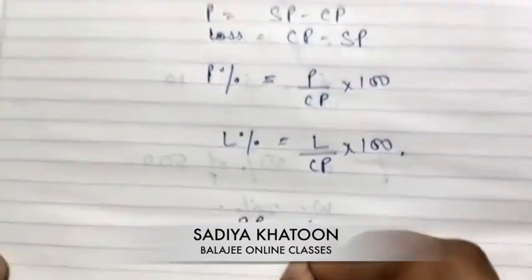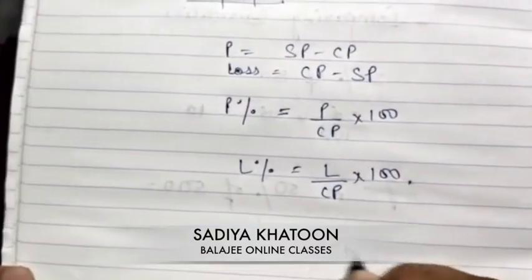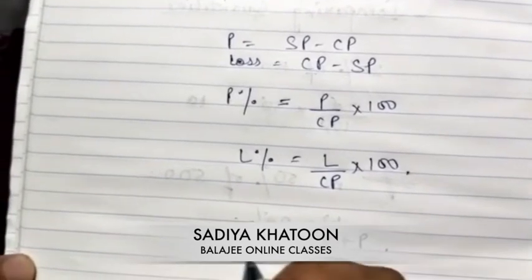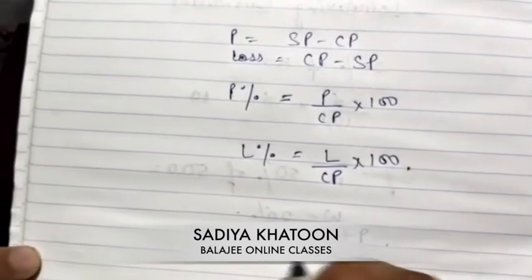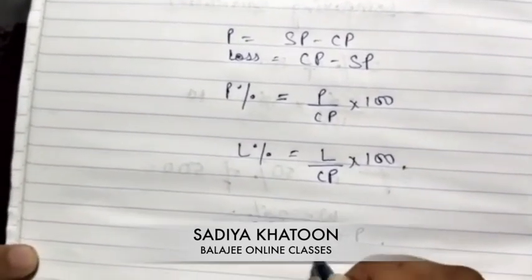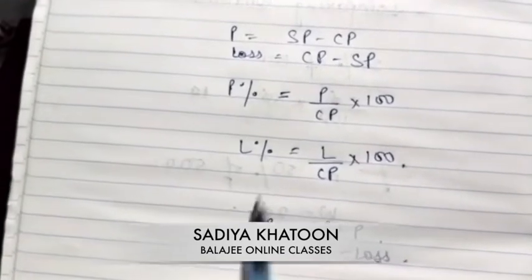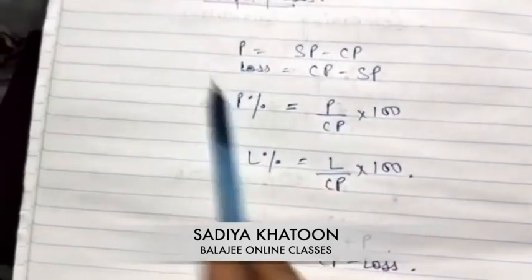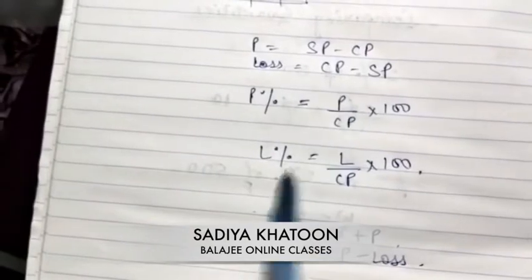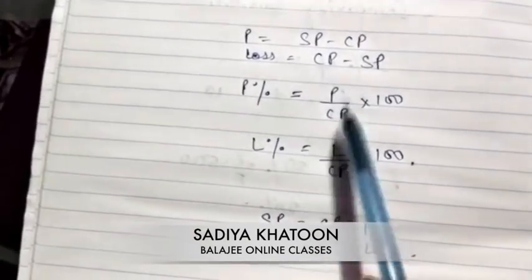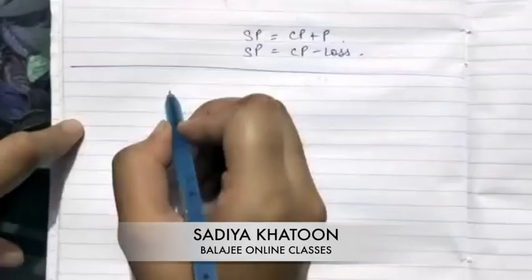If you have to find SP and you know CP, then SP equals CP plus profit. Similarly, if there is a loss, SP equals CP minus loss. If you remember these two formulas, you can transpose them to get further formulas as needed.